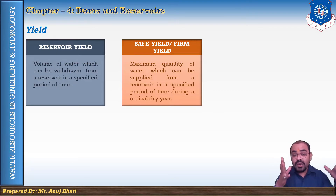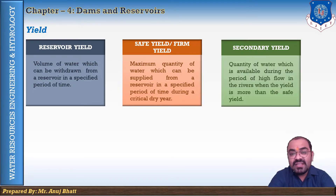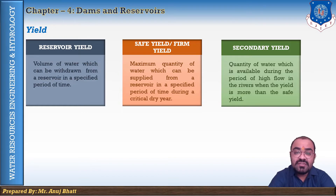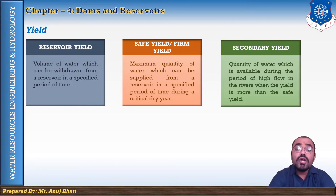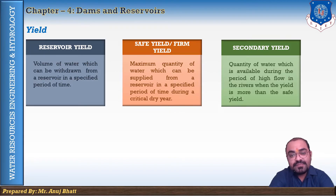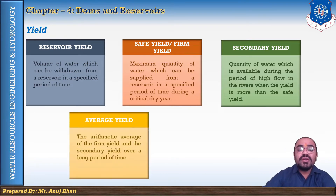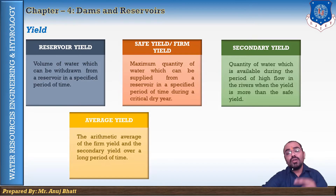Secondary yield is the quantity of water available during the period of high flow in the river when the yield is more than the safe yield. Hydropower may be developed from such secondary yield and sold to industries at cheaper rates. However, power commitments for domestic supply should be based on the firm yield. The arithmetic average of the firm yield and the secondary yield over a long period of time is called the average yield.